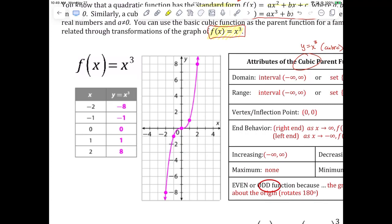The easy way I remember x³ is I call it the disco graph. If you know Saturday Night Fever, it looks like John Travolta — his arm is up on the right and down on the left. The cover of Saturday Night Fever looks just like the x³ graph. So x cubed is the disco graph; that's how I always remember it.